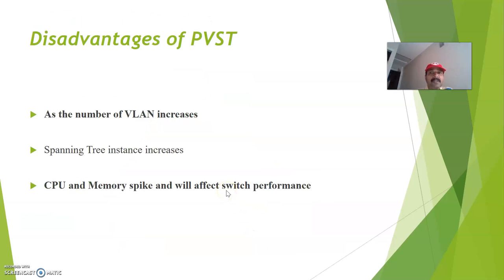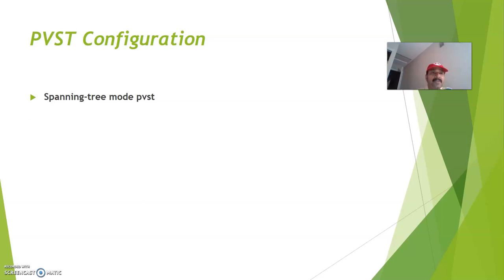What are the disadvantages? As the number of VLANs increases, the spanning tree instances increase, which increases CPU and memory usage and will definitely affect switch performance. The advantage is it performs load balancing across different VLANs. To configure PVST, go to switch configuration mode and specify: spanning-tree mode pvst.